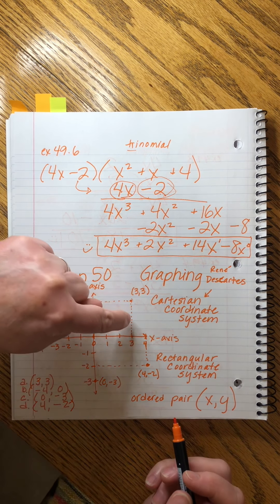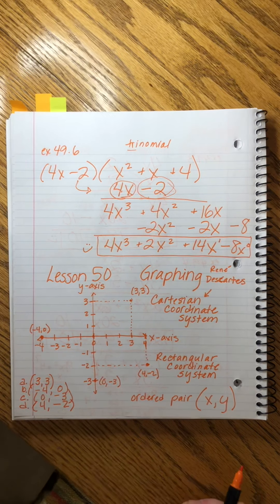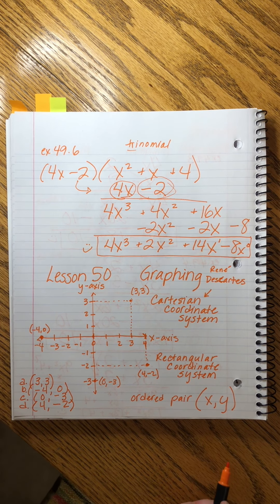The last thing I want to tell you is that notice how there are like four boxes in our overall system. We call those quadrants. Quad, one-fourth, right? Quadrants.